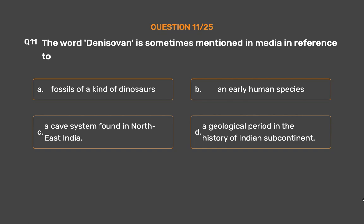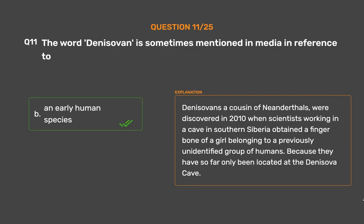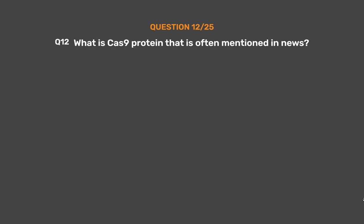The correct answer is Option B: An early human species. Denisovan, a cousin of Neanderthals, was discovered in 2010 when scientists working in a cave in southern Siberia obtained a finger bone of a girl belonging to a previously unidentified group of humans. They have so far only been located at the Denisovan cave.